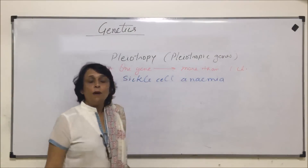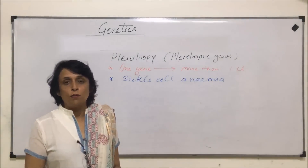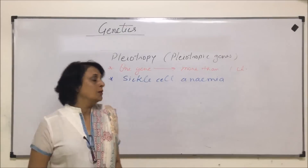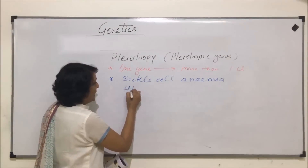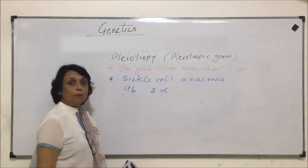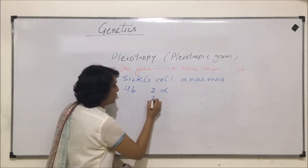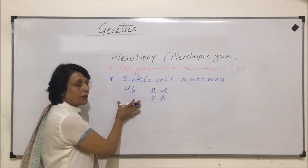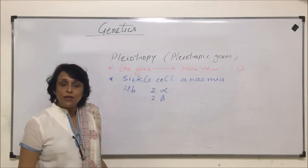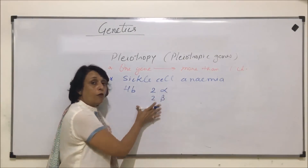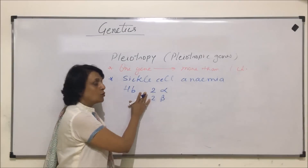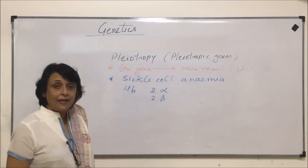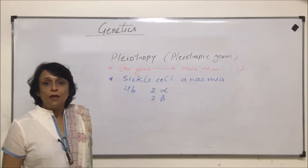Let us first talk about the normal situation. In human hemoglobin, there are two alpha polypeptide chains and two beta polypeptide chains. The globin part, that is the protein part, has four polypeptide chains — two alpha and two beta.